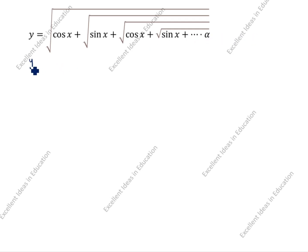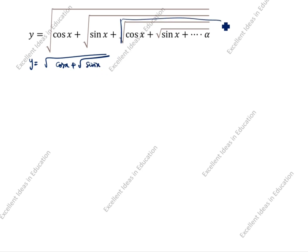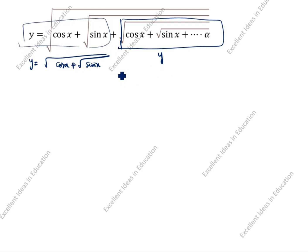So how we will write this one: y is equal to root of cos x plus root of sin x. You see here this one goes on repeating, so we will take this inner part as y again — y, y, y repeating.